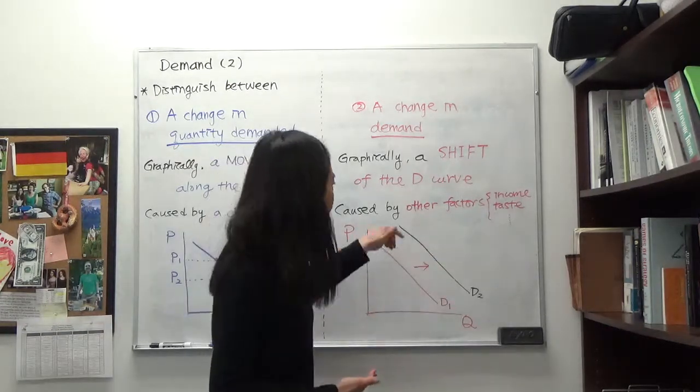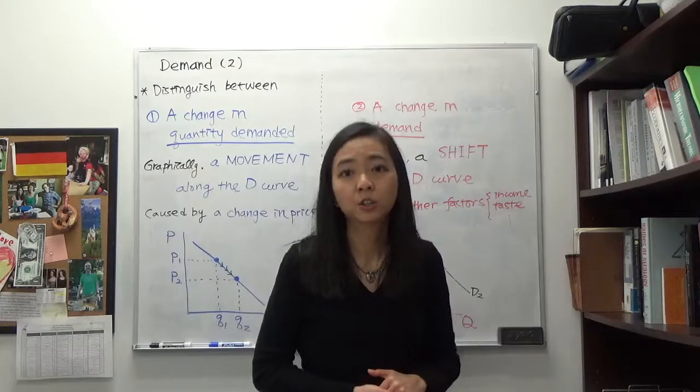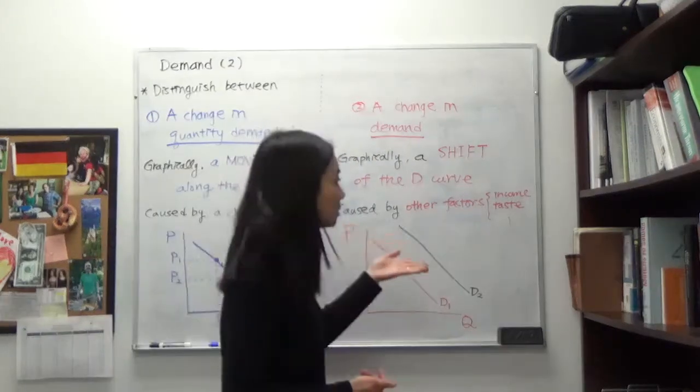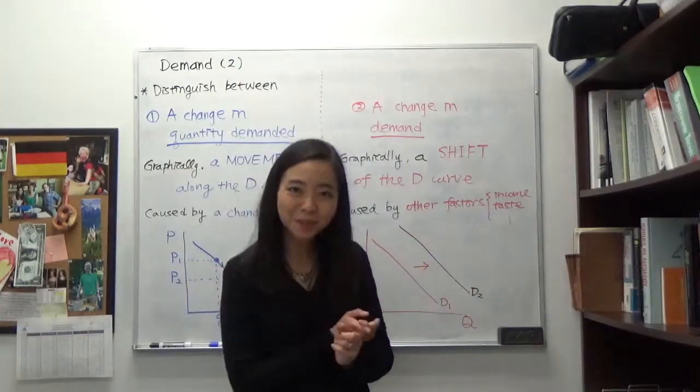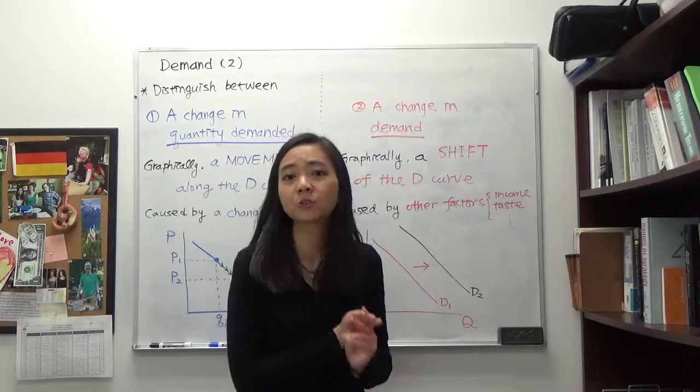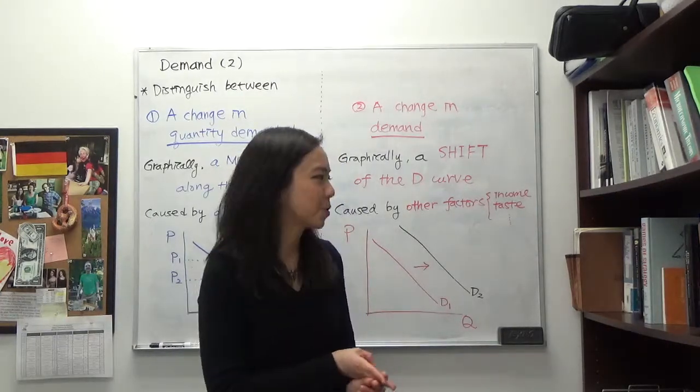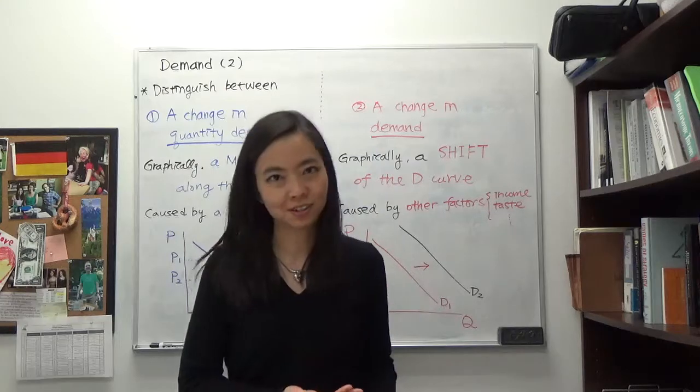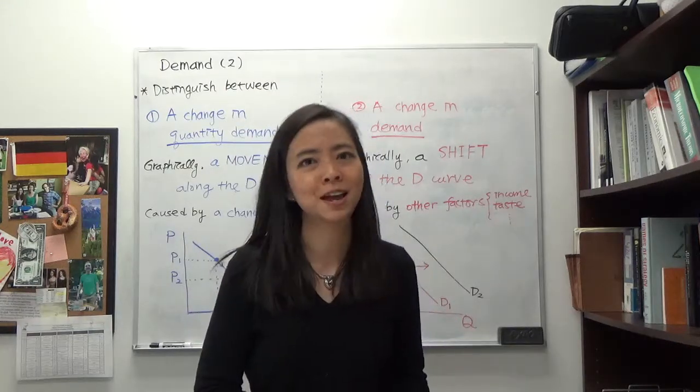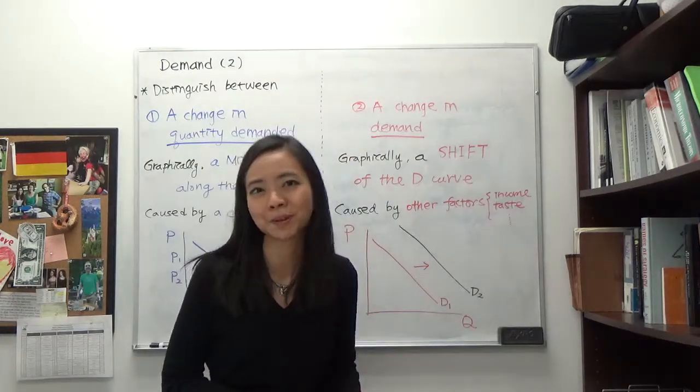So there are many factors that can shift our demand curve, that can change our demand. It includes our income, our taste, the number of consumers in Franztown, and also the price of related goods, including the price of substitutes and the price of complements.